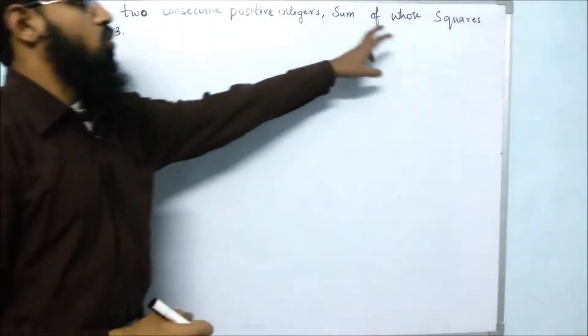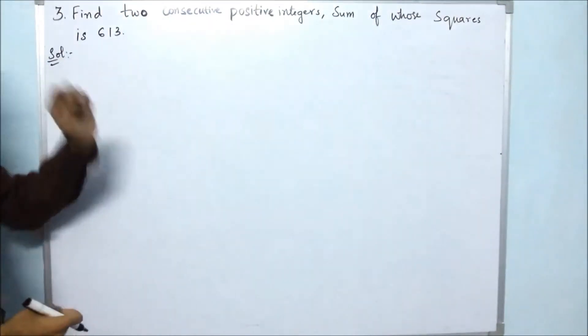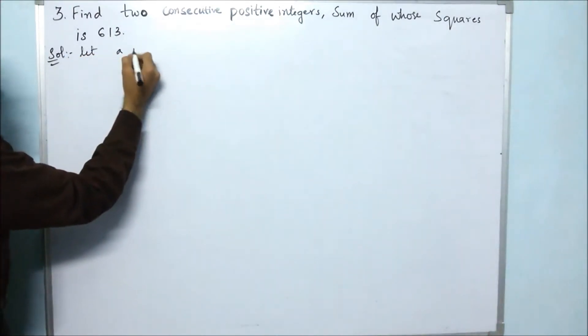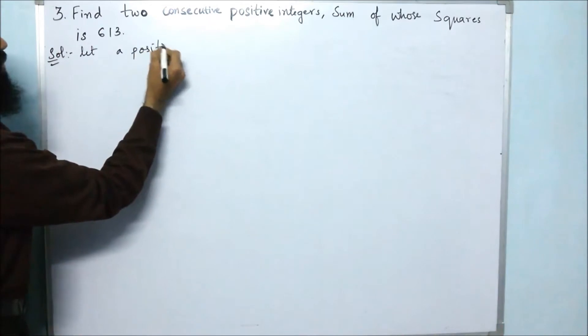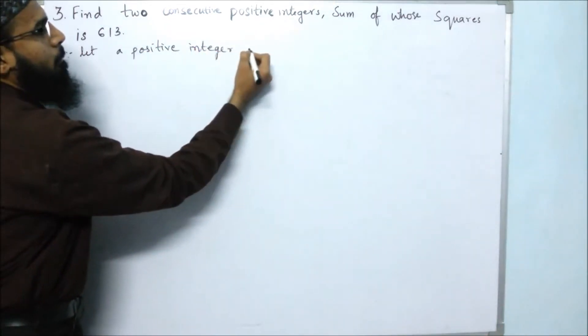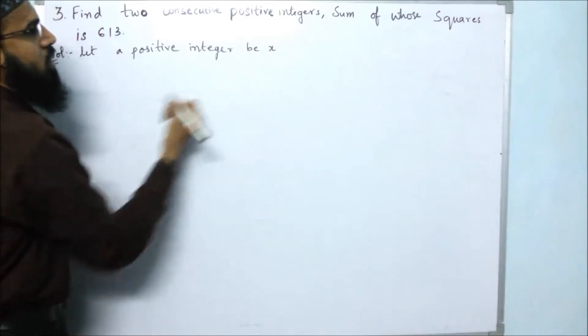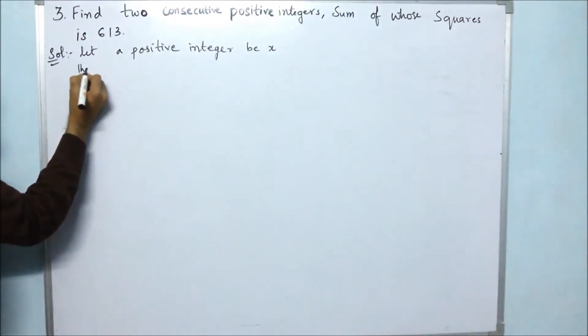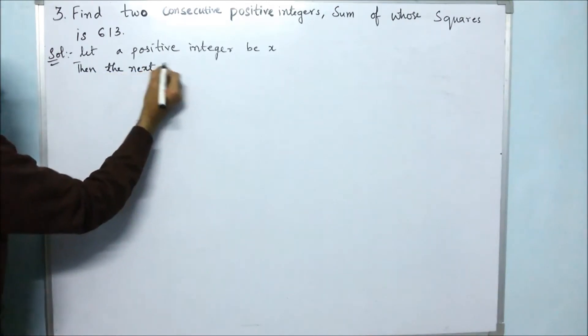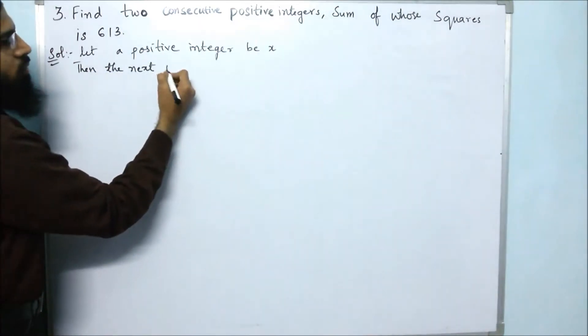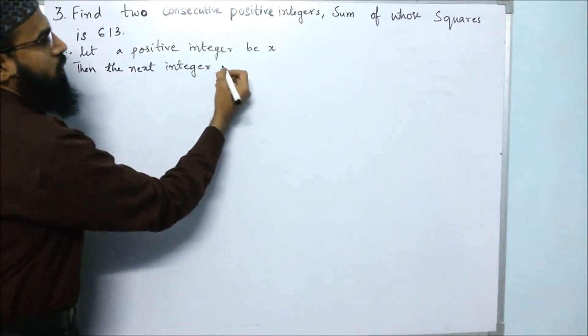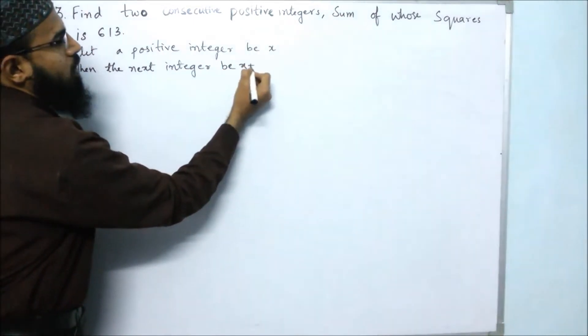If we add their squares we should get 613. So let a positive integer be x. Then the next or second integer be x plus 1.